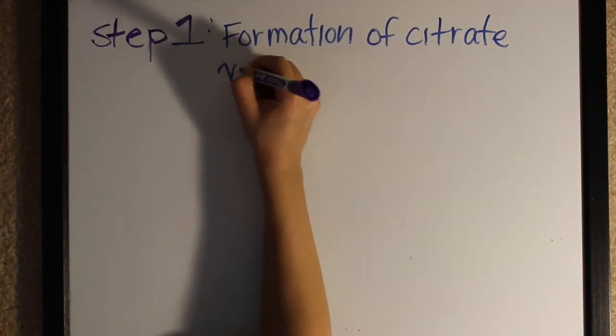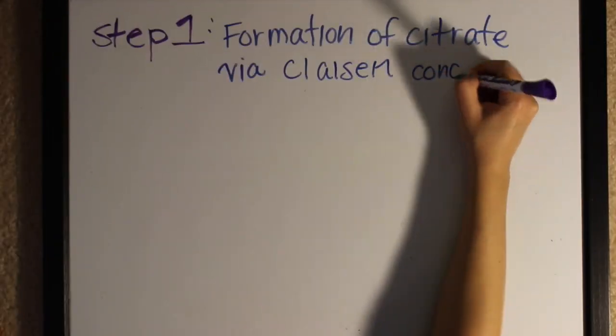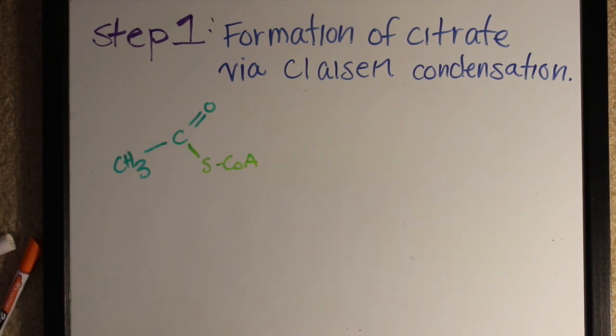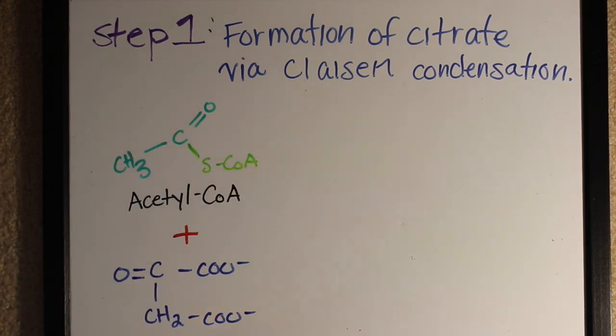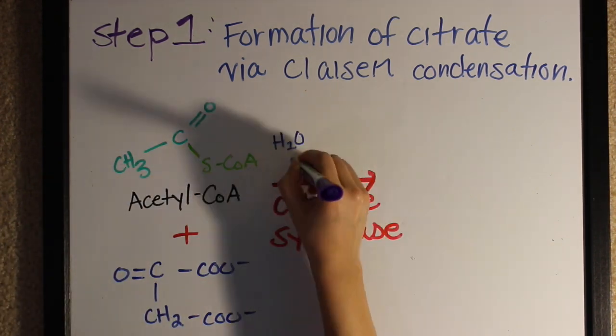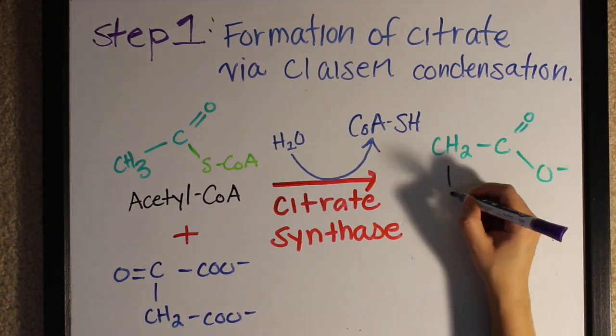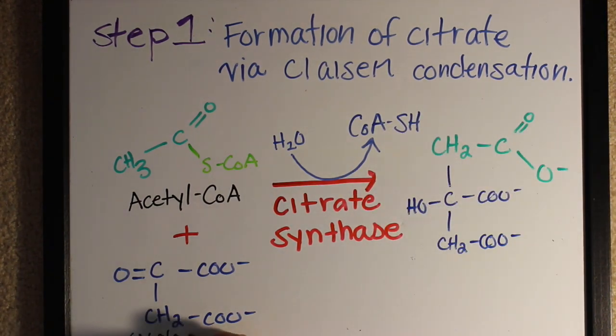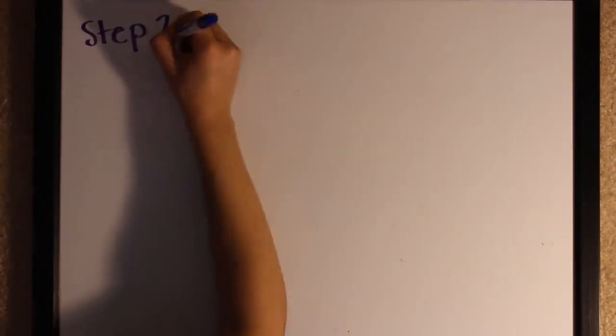Step one is the formation of citrate via Claisen condensation. Here we have acetyl-CoA and oxaloacetate. Citrate synthase is the enzyme that speeds it up so that we can form citrate.